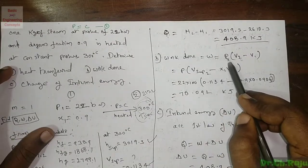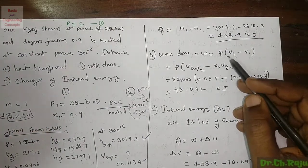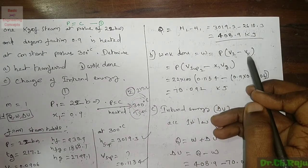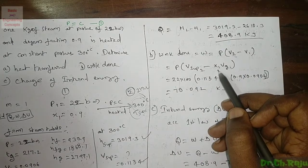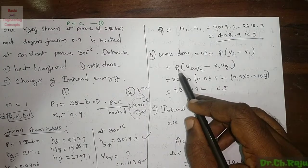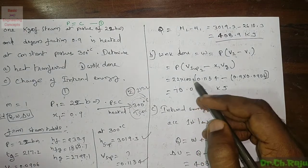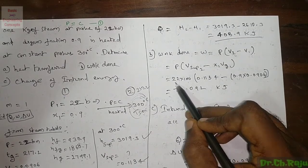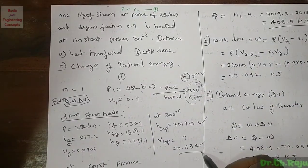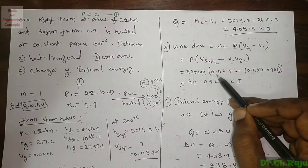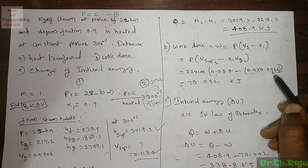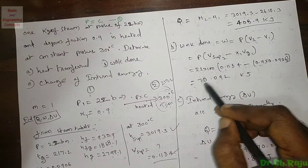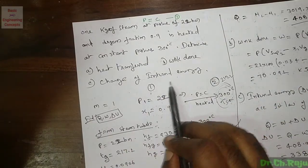Work done W = p(V₂ - V₁). Since pressure is constant, this is p(V_sup - x₁·Vg). Converting pressure: 22 bar × 100 = 2200 kN/m². So W = 2200 × (0.1134 - 0.9 × 0.0906) = 2200 × (0.1134 - 0.0815) = 70.092 kJ.